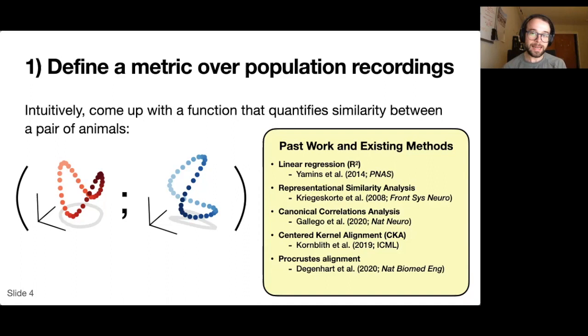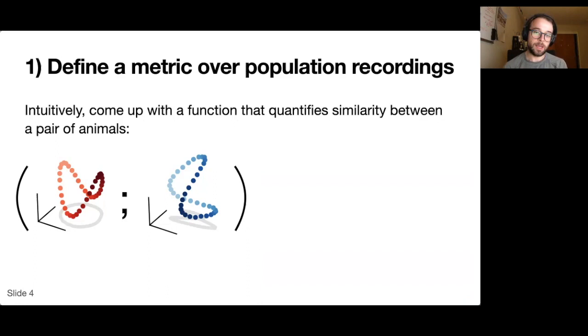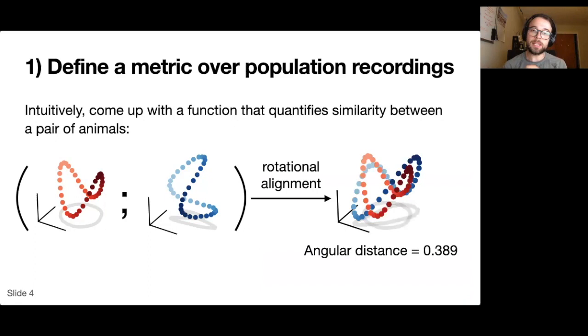In some sense, our method is a generalization and extension of Procrustes analysis. The basic idea is to apply a rotational alignment and then compute the distance between the two recordings or the two manifolds, if you will, within this aligned space.